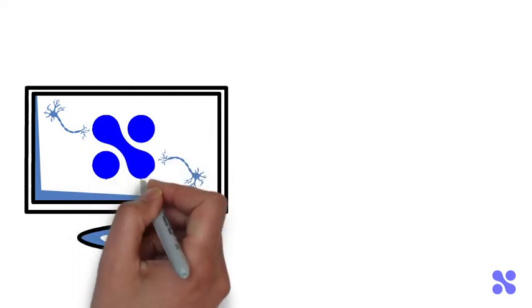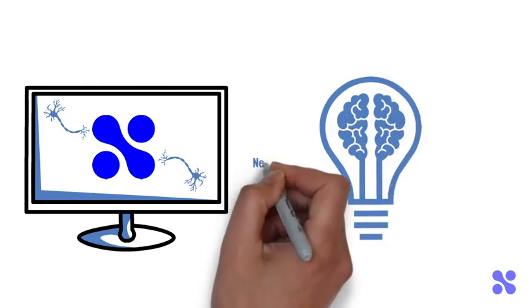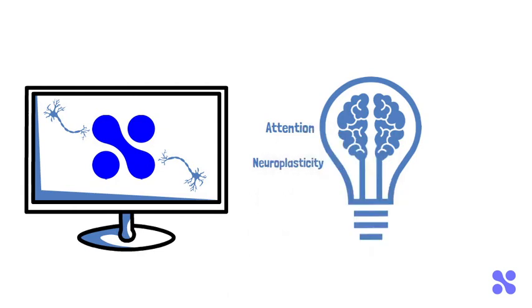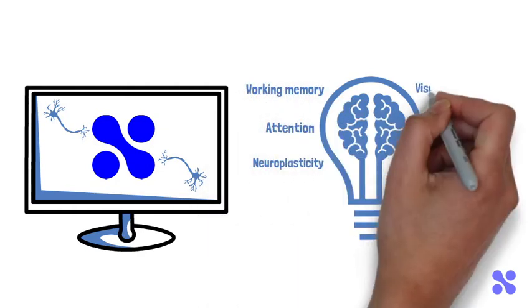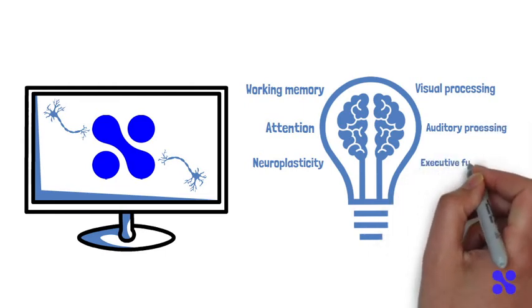For example, Neurotrekker has been shown to boost brainwaves in ways that show increased neuroplasticity, alongside clear gains in attention, working memory, visual processing speed, auditory processing capacity, and executive functions.